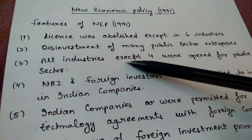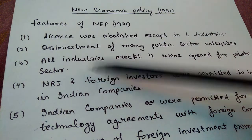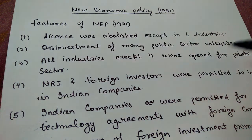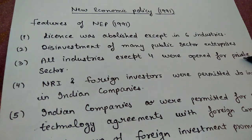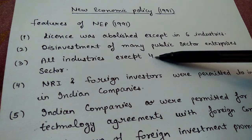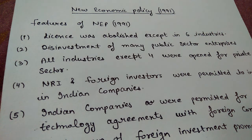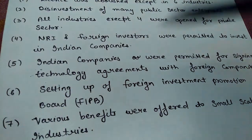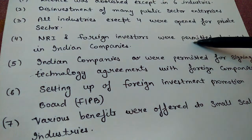Public sector enterprises — except 4 industries — were opened for the private sector. All industries except 4 were made available to private sector participation. Only those 4 industries were reserved for the government alone, such as Railways and air traffic control, which remain in the government's hands.